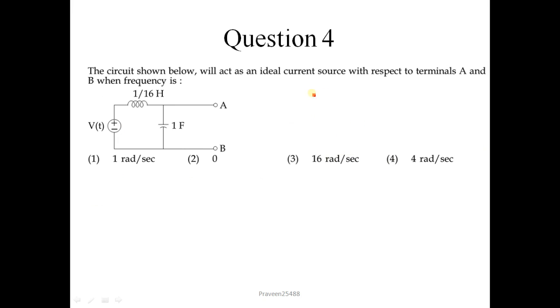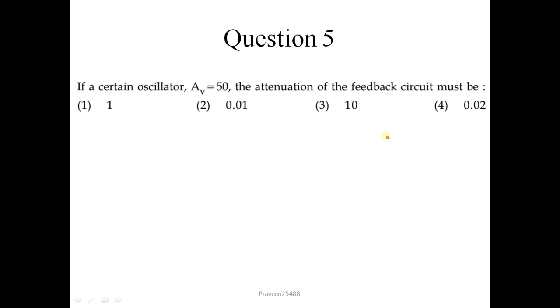Now question number 4. The circuit shown below will act as an ideal current source with respect to terminals A and B when frequency is. So as you can see the frequency is in radian per second and you know the formula to calculate this. Frequency ω is equal to 1 upon under root LC. Where L is given 1 over 16 Henry and C is 1 farad. So on putting this value, we can easily get the ω which is equal to 4 radian per second. So correct option is 4. Question number 5. If a certain oscillator, the voltage gain is given 50, the attenuation of the feedback circuit must be. So we know that attenuation α is simply inverse of this. So it is 0.02. Option 4 is correct.